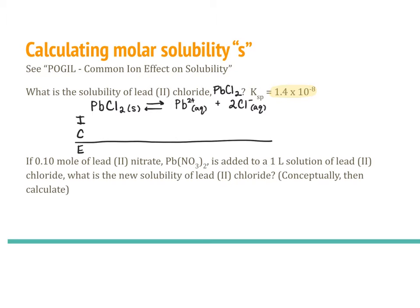When we are dealing with a relatively insoluble salt, you can write an equation describing the dissolution of that salt. Lead chloride breaks into one Pb²⁺ ion and two chloride ions. If there is nothing in solution when you add the lead chloride, we will initially start with no ions. Solubility is the amount of moles of lead chloride that dissolve. For every lead chloride that dissolves, we will have one lead ion and two chloride ions in the water. At equilibrium, the concentration of lead will be S and the concentration of chloride ion will be 2S.